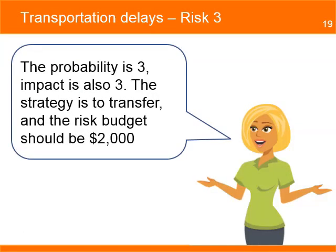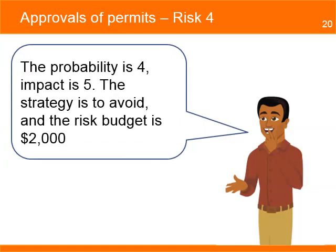The procurement officer added a new risk she believes is important: purchase materials may arrive a week later than planned. She estimates the probability at level 3 and impact at level 3. The strategy is to transfer the risk by contacting a second transportation company. The cost to the project for this risk is $2,000.